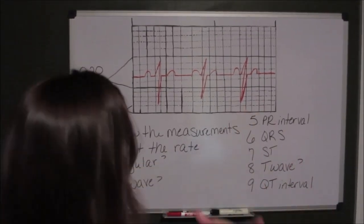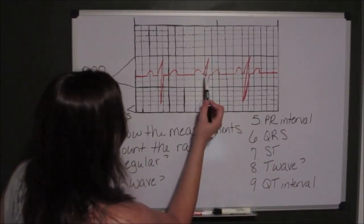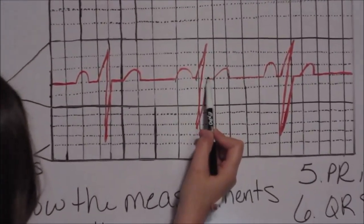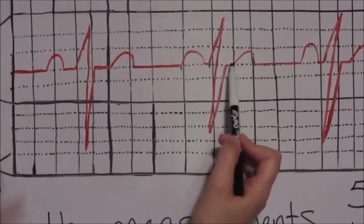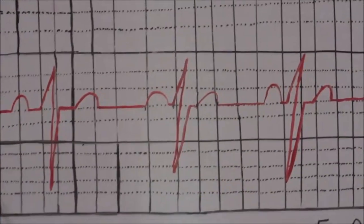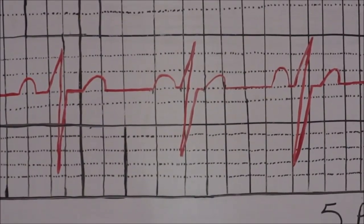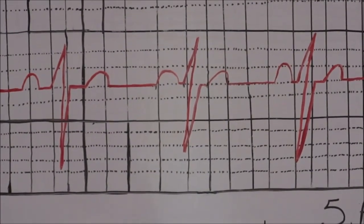QRS Interval. PR Interval starts here, where the Q leaves the baseline, to where it returns. 1 box on this complex, 0.04 seconds. It's less than 0.12.